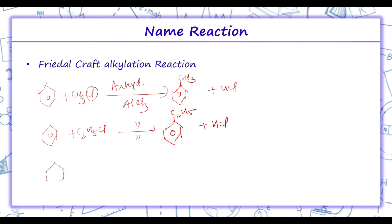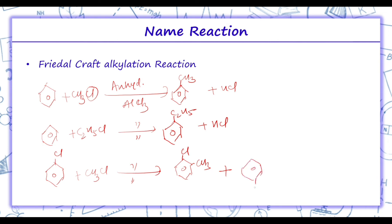Now if we have chlorobenzene, when Friedel-Crafts alkylation takes place, because Cl is ortho-para directing, we get orthochlorotoluene and parachlorotoluene. Because Cl is ortho-para directing, we get ortho and para derivatives. The para isomer is the major product formed.